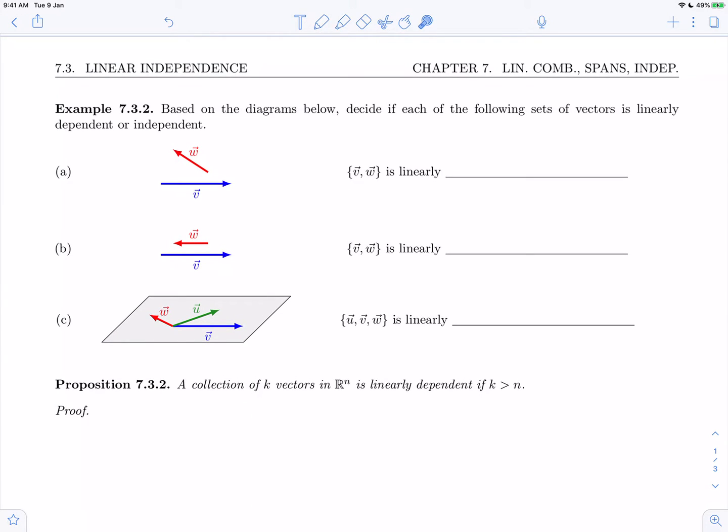In a we're given a vector w and a vector v. Those two vectors are diagrammatically shown to be non-parallel and that means that the set {v, w} is linearly independent.